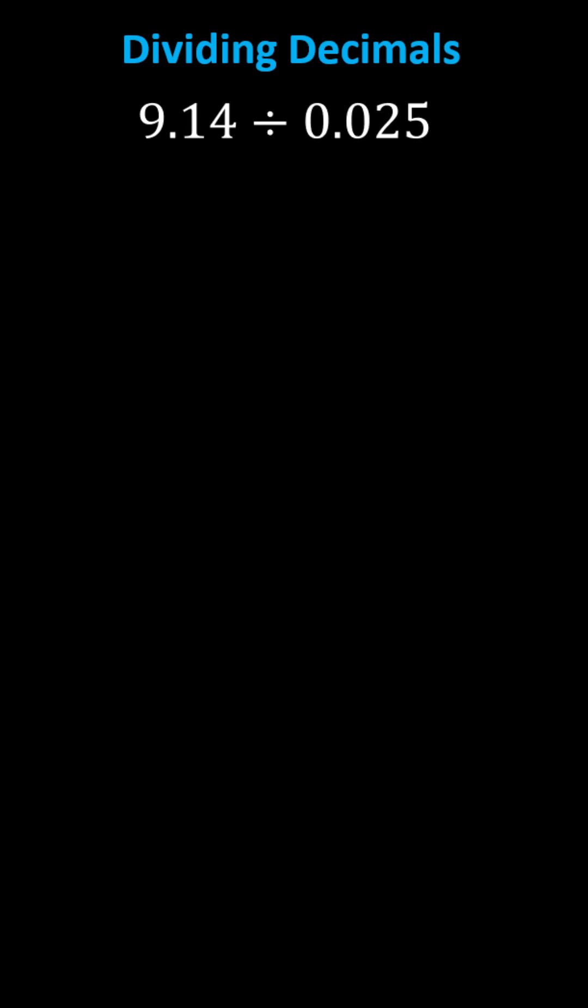When dividing decimals, we begin by writing the given quotient in long division form, or in this case, we have 9 and 14 hundredths divided by 25 thousandths.